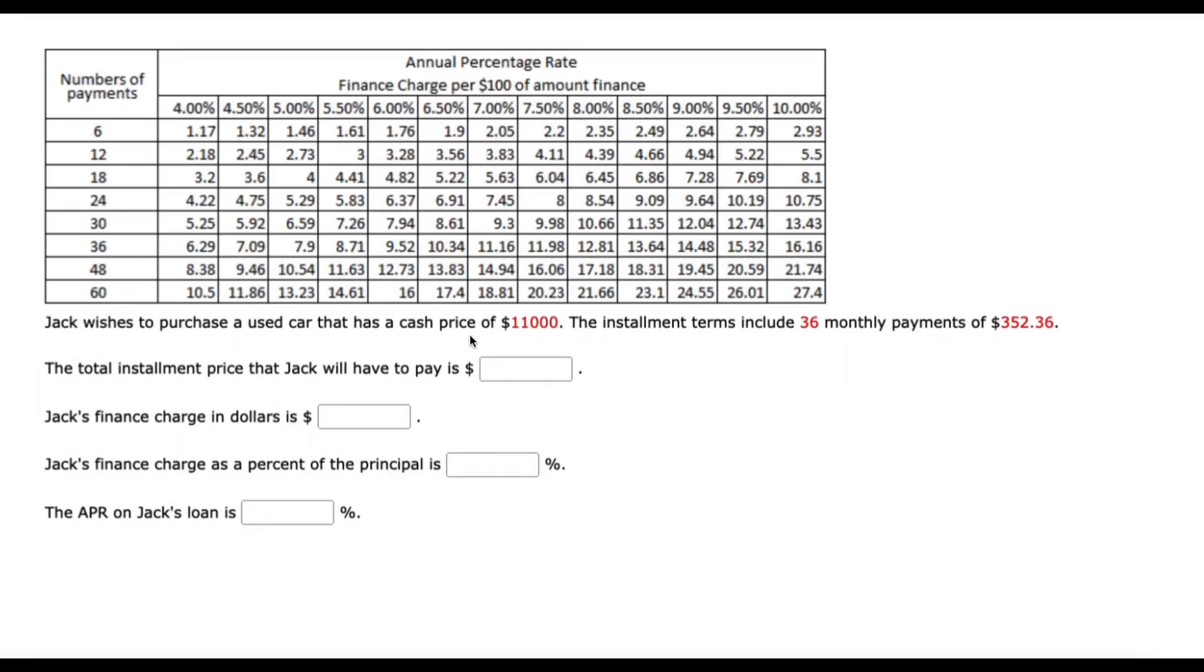Jack wishes to purchase a used car that has a cash price of $11,000. Now, assuming that he doesn't have $11,000 to give to the seller, he's going to have to borrow it from the bank.